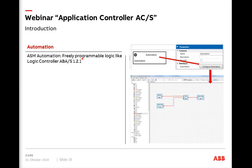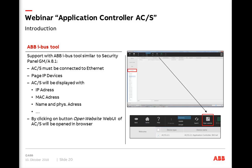The freely programmable logic is similar to the logic controller ABAS121 — it's one ASM. You select the automation ASM and click 'configure automation' to open the worksheet, where you create your own logic using existing modules: logical functions, comparisons, mathematical functions, PID controller, and more. You then go back to the ETS and integrate it into your complete application controller setup.